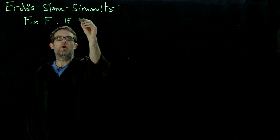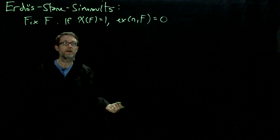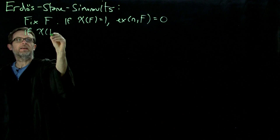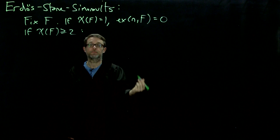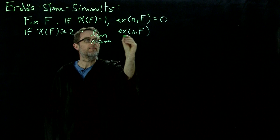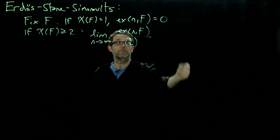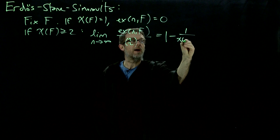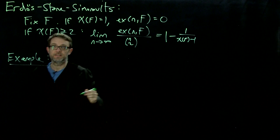We'll dispense with the stupid case first: if the chromatic number of F is zero, then F has no edges and you can pack in no edges. If the chromatic number of F is at least two, we're going to be able to say asymptotically how many edges. Specifically, the Erdős-Stone-Simonovits theorem says that if I take the limit as n goes to infinity of the largest number of edges in an n-vertex graph as a proportion of the total edges of the complete graph on n vertices, that limit is 1 minus 1 over the chromatic number of F minus 1.